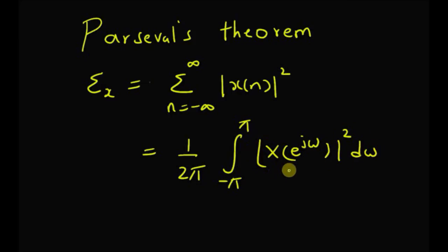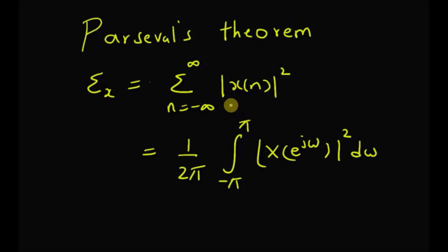This integration is basically the area under the square of the amplitude of the DTFT, and this 2 pi is basically dividing by the total bandwidth in terms of frequency. So the energy is the same whether measured in time domain or frequency domain, and this quantity — the square of the amplitude of the DTFT — is known as energy density.